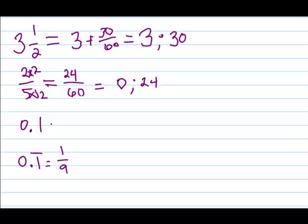This 0.1, as a fraction, is 1 10th. And in terms of sexagesimals or 60ths, that's the same as 6 60ths. So we would write this as 0 semicolon 6.